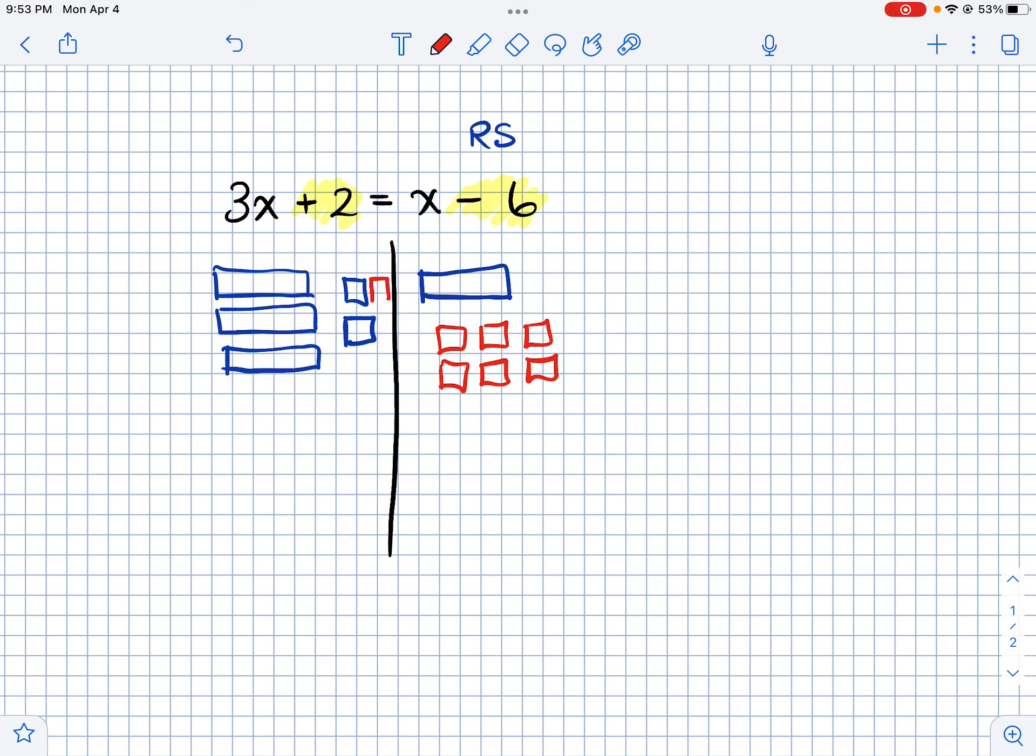But you can't just add two red tiles to one side of the equation. So you'd also have to add two red tiles to the other side, because whatever you do to one side you got to do to the other side to keep the equation balanced. So then what happens is these things are going to get eliminated. So let's eliminate those. They're gone.